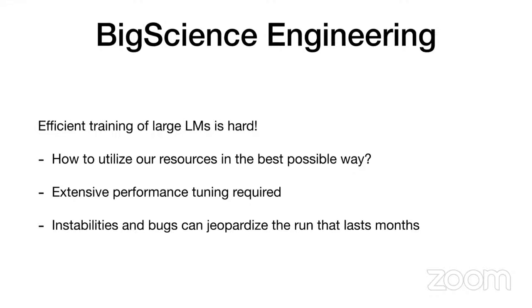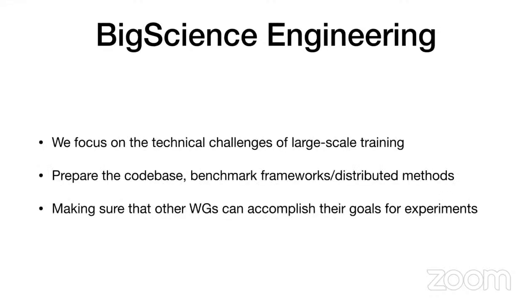To address this problem, we need to make sure that the code for experiments is both well tuned to the conditions it's used in and stable in terms of training performance, or at least that there is a way to recover the run without losing too much progress. Specifically, our group focuses on all challenges introduced by scaling transformer language models to tens and hundreds of billions of parameters. Our responsibilities include finding the appropriate well-tested framework for training very large language models, comparing the performance of different distributed training methods on the actual Janzé cluster, and making sure that the requirements of other working groups — such as modeling, evaluation, and carbon impact — are matched.